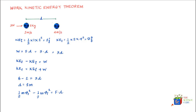Let's take a numerical problem to understand this concept better. There is a mass m of 2 kilograms on which two forces are applied: F1 = 5 newtons and F2 = 2 newtons. The initial velocity of the mass is 0 meters per second.